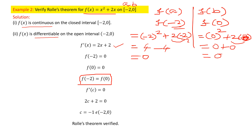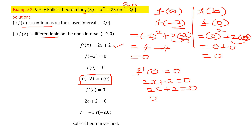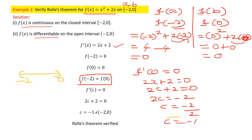Now I find the critical point by setting f'(c) = 0. So 2c + 2 = 0, giving 2c = -2, and dividing both sides by 2 gives c = -1. I check whether this point lies in the interval [-2, 0]. The critical point c = -1 lies within the interval [-2, 0], so Rolle's theorem is verified.